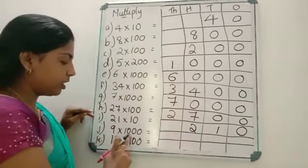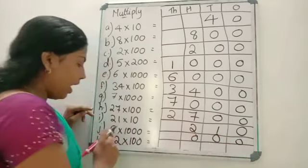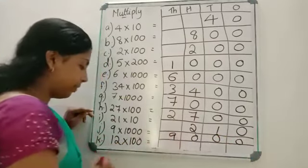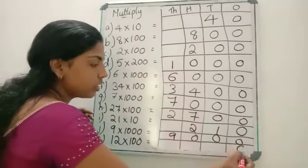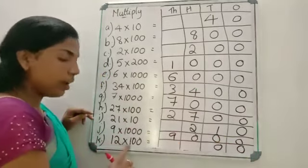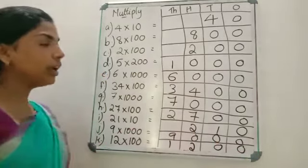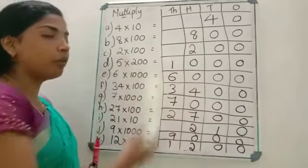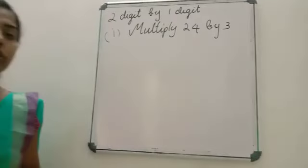Next: 9 into 1000 — how many zeros? 3 zeros. And 9 into 1 is 9 itself, so the answer is 9000. Next: 12 into 100 — how many zeros? 2 zeros. And 12 into 1 is 12, so the answer is 1200. The rest of the questions you have to do as homework. I hope all of you understood.